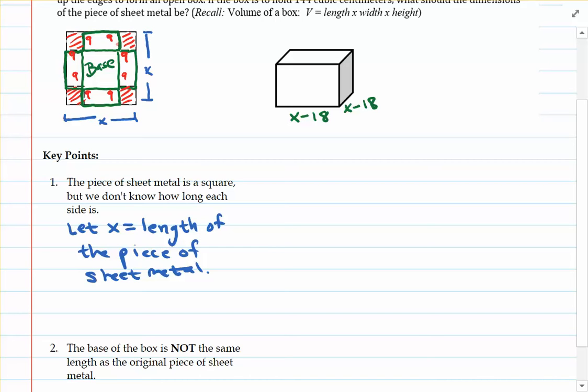But remember, removing the corners forms the four flaps, and each corner is a nine by nine, which actually determines the height of each of these flaps, which ultimately means that the height of our box is going to be nine centimeters.